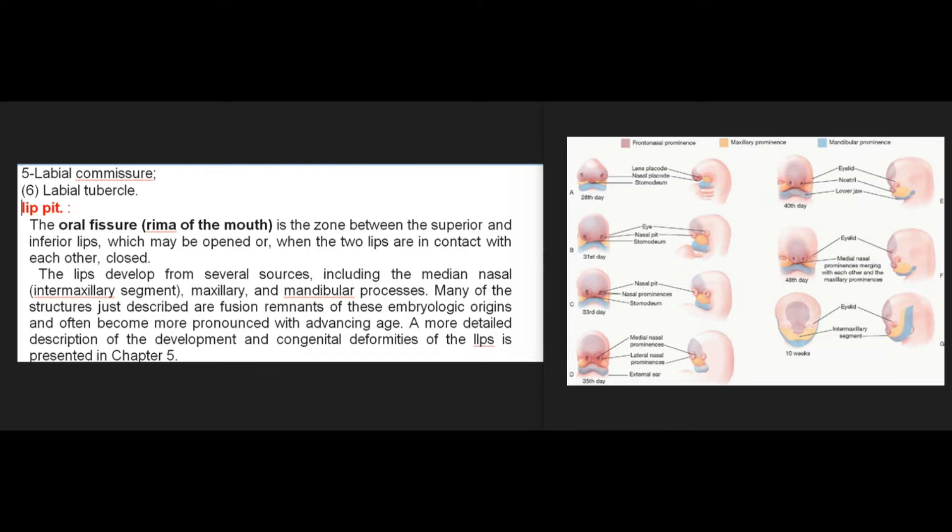The oral fissure (rima of the mouth) is the zone between the superior and inferior lips, which may be opened or, when the two lips are in contact with each other, closed. The lips develop from several sources including the median nasal (intermaxillary segment), maxillary, and mandibular processes. Many of the structures just described are fusion remnants of these embryologic origins and often become more pronounced with advancing age.